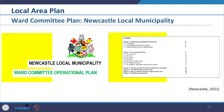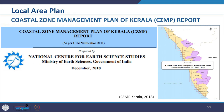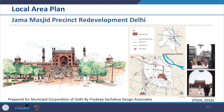We are looking at the image of the ward committee plan of Newcastle local municipality in South Africa, where strategic directions are indicated and detailed plans are prepared. We are also looking at the example of the Coastal Zone Management Plan of Kerala — the CZMP report as per the Coastal Regulation Zone Notification 2011. Another example is the Jama Masjid precinct redevelopment plan in Delhi, an urban redevelopment local area plan prepared for Municipal Corporation of Delhi in 2006. The consultant was Pradeep Sachdeva Design Associates.